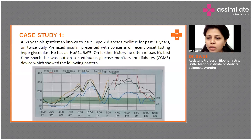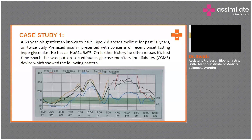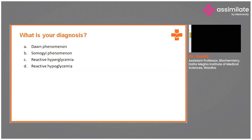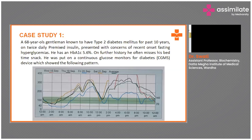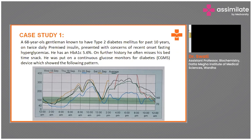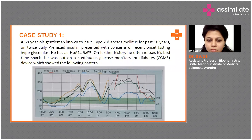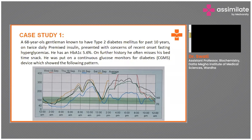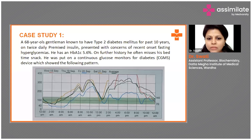Can you tell me what are the four counter-regulatory hormones? One answer came in: glucagon. That's right. What about the other three? One doctor has given us glucagon, cortisol, growth hormone, and epinephrine. The four counter-regulatory hormones are glucagon, cortisol, growth hormone, and epinephrine.